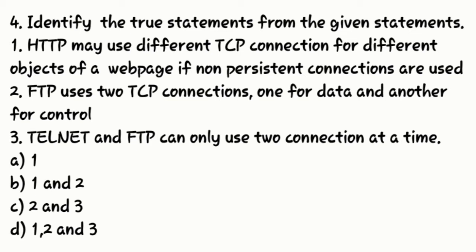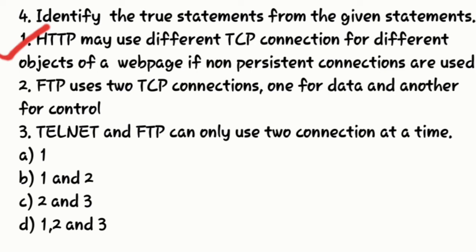Which of these three statements are correct? Statement one: HTTP may use different TCP connections for different objects of a web page if non-persistent connections are used. This is true because if it is non-persistent connections and there are 20 objects, they will use 20 TCP connections for fetching those objects.